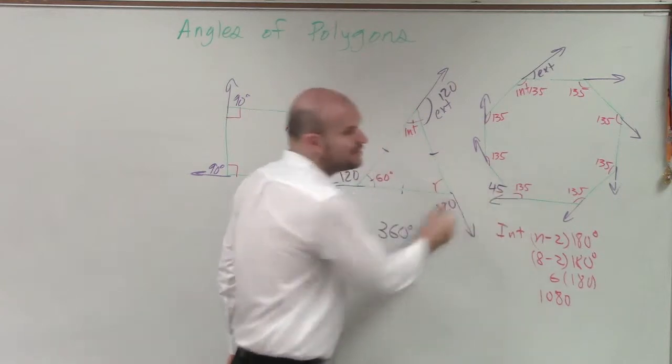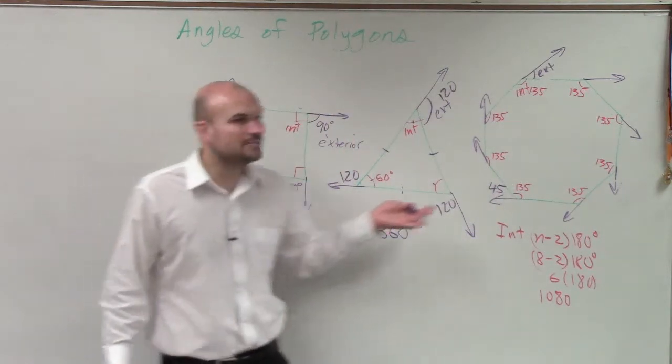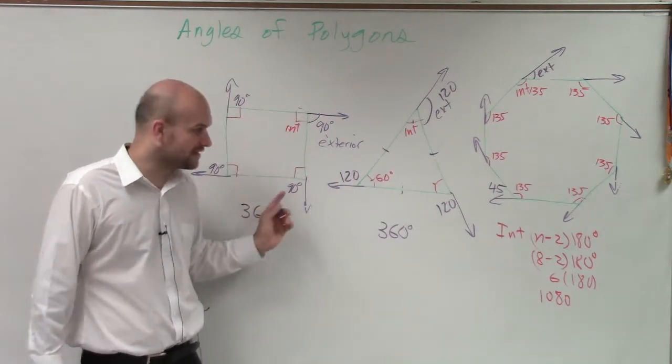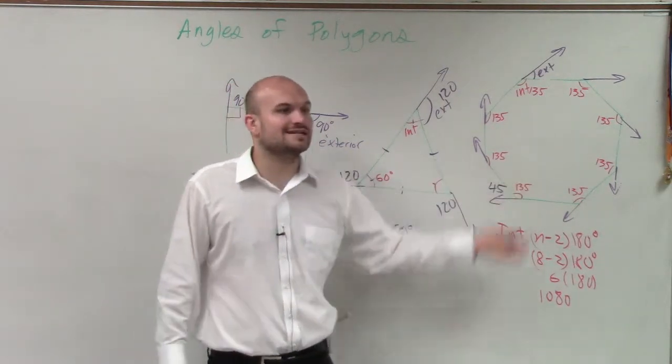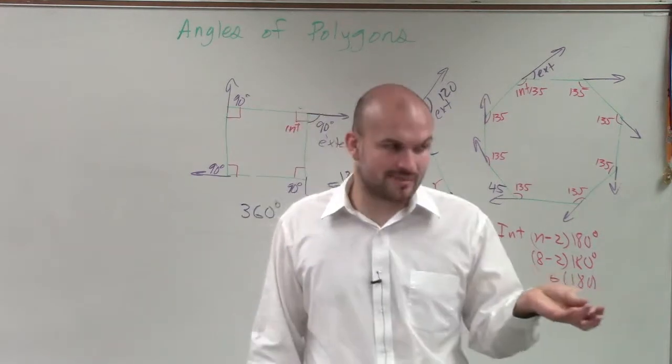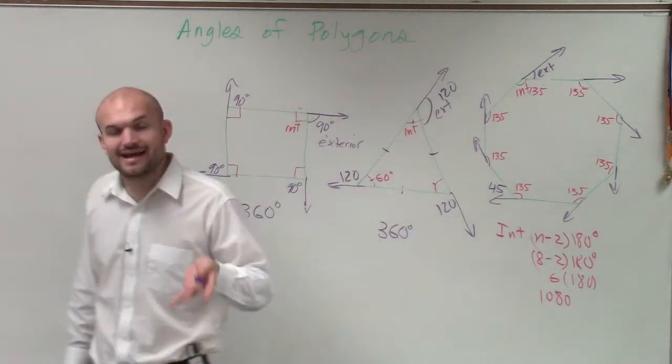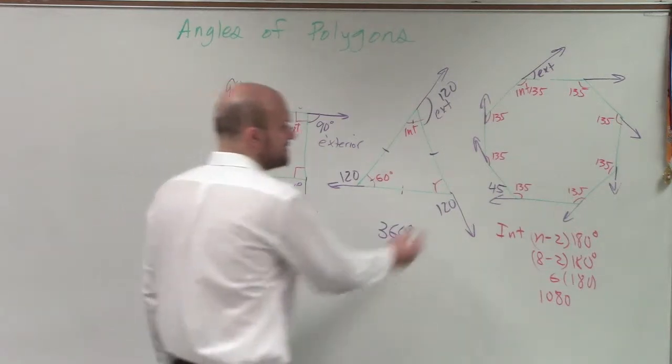Because these two angles are supplementary. Why? They're a linear pair, right? I'm saying the same thing each definition over and over again. These two angles, your interior and your exterior angles, Megan, add up to 180. They're supplementary. They're a linear pair. So that means that's 45.